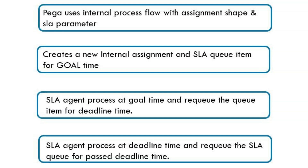In our use case, the agent increases the urgency and then checks if there is a deadline action configured. If yes, it requeues the queue item for the deadline. Once the deadline is reached, the same SLA agent processes the deadline item, does the escalation, increases the urgency, and requeues if there is a past deadline action. At the end we should see an AssignInternal instance and a SystemQueueServiceLevel instance waiting for past deadline processing.